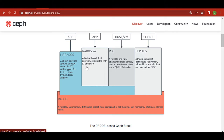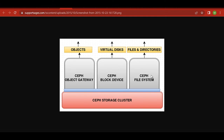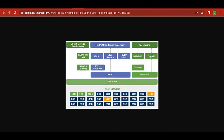The third option is RADOS Gateway, or RGW — this is the object storage option. It is a bucket-based REST gateway running on top of HTTP, compatible with both S3 and Swift protocols. S3 is the protocol introduced by Amazon; Swift comes from the OpenStack community. Ceph supports both, but S3 is mostly used. In the architecture, librados sits below, and the block device layer also supports a Linux kernel module for direct kernel-to-librados communication.